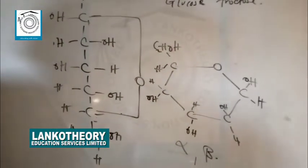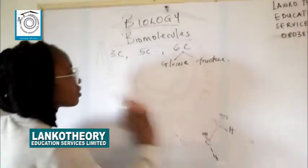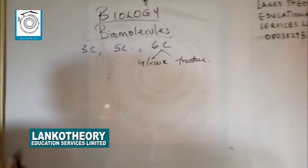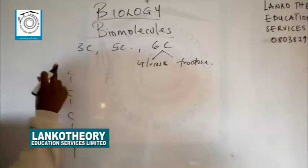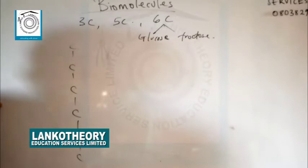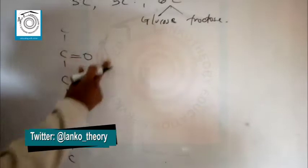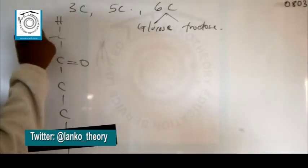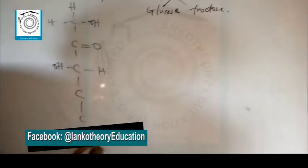The last monosaccharide we'll discuss before moving into disaccharides is fructose. Fructose has the same molecular formula as glucose, but a different functional group — specifically, fructose has a ketose functional group located on carbon two.